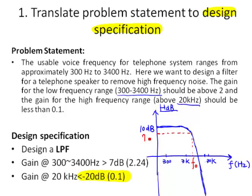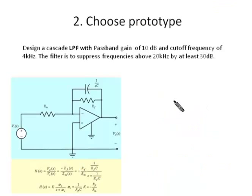We know that at the cutoff frequency, the passband gain is 3 dB below the passband gain, so that is 10 minus 3 equals 7 dB. Based on our design specification, if we make the cutoff frequency greater than 3.4 kHz, that will satisfy the design specification. So anything below the cutoff frequency, the gain of the circuit should be greater than 7 dB. There are many low pass filter prototype circuits available, and in this tutorial we will use cascaded identical low pass filters.